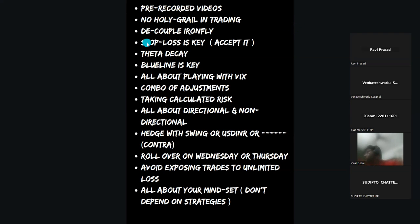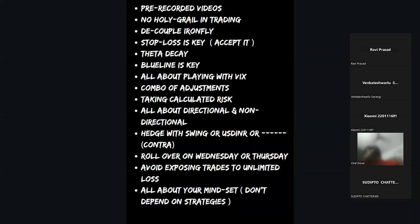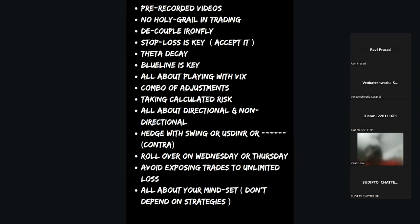Stop loss is the key. A typical Iron Fly requires 2.5 to 3 lakhs capital. If you're managing the Iron Fly only with reverse buying, calculate stop loss on 40,000–50,000 capital. But typically, when deploying an Iron Fly, you must reserve 2.5 to 3 lakhs for adjustments. Your stop loss should be calculated on the overall capital preserved for the trade, not just the 50,000 deployment margin.